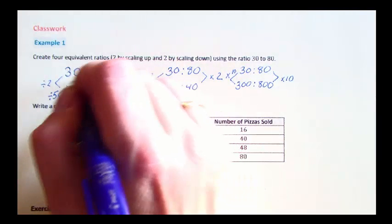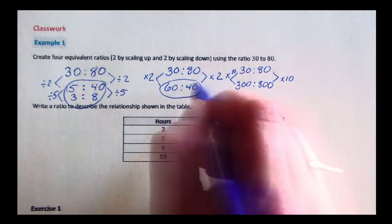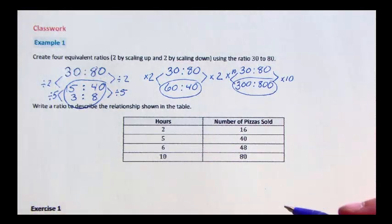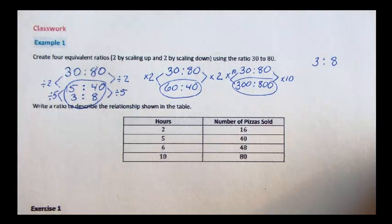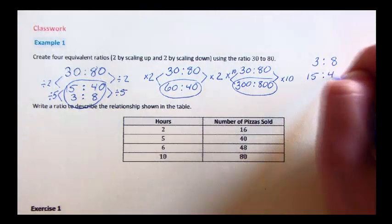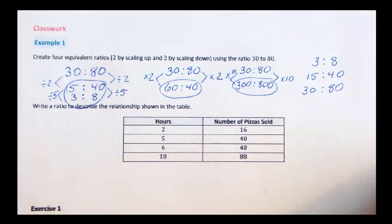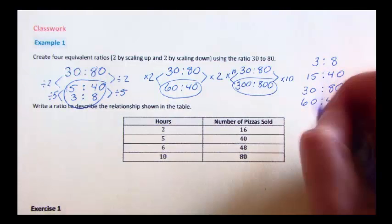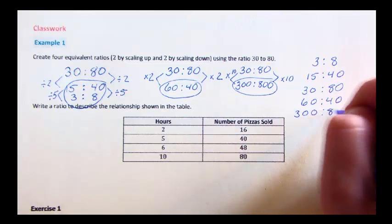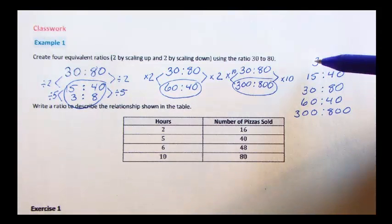There we go. We have 2 equivalent ratios where we've scaled down, and 2 equivalent ratios where we've scaled up. If we listed all these ratios in order: 3 to 8 is our smallest ratio, 15 to 40 is an equivalent ratio, 30 to 80 is the one we started with, 60 to 40, and 300 to 800. All 5 of these ratios are equivalent. They all have the same value, and that value is 3 eighths.